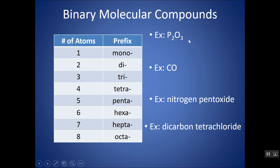Looking at this example, I can see this is a molecular compound. I know it's a molecular compound because it's made of two different nonmetals — binary, two different nonmetals. The smallest particle would be a molecule here as well.